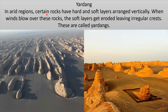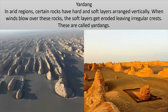In arid regions, certain rocks have hard and soft layers arranged vertically. When soft rocks between hard rocks get eroded, they result in the formation of yardangs. They look like irregular crusts and are called yardangs.